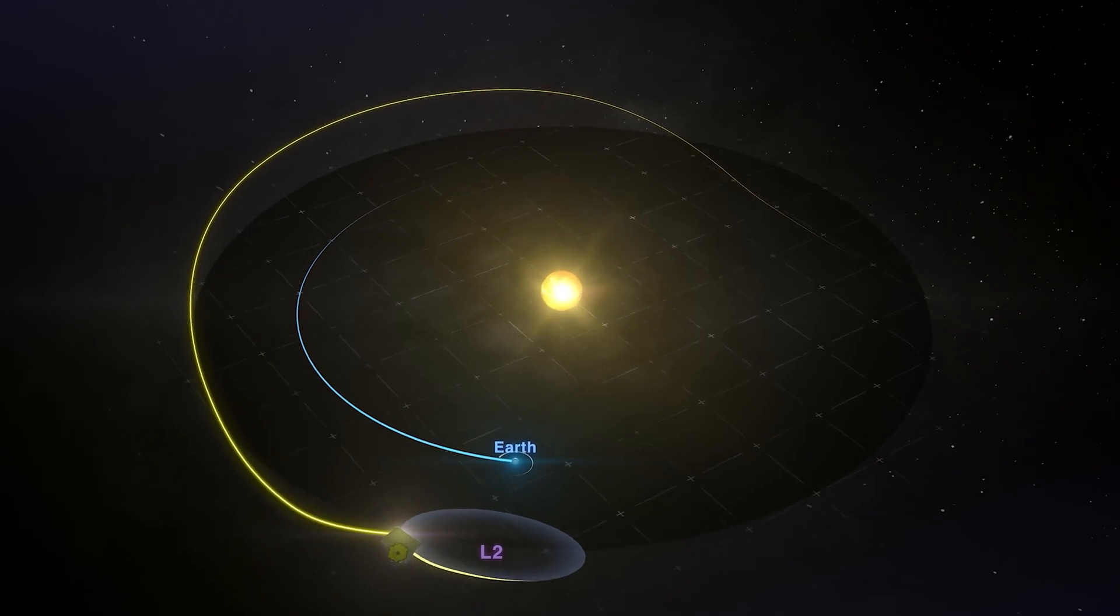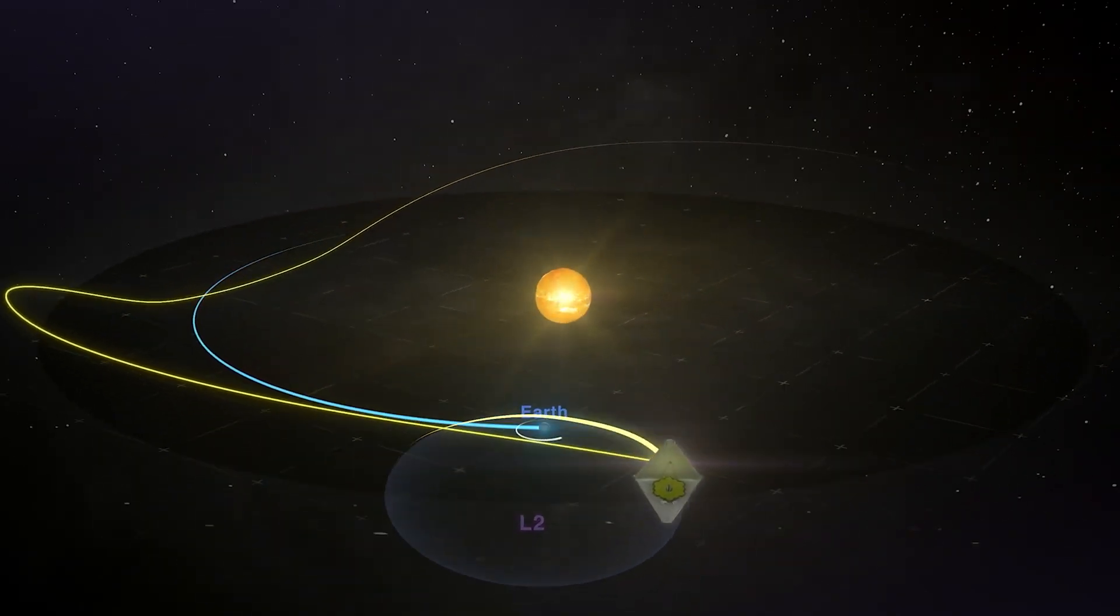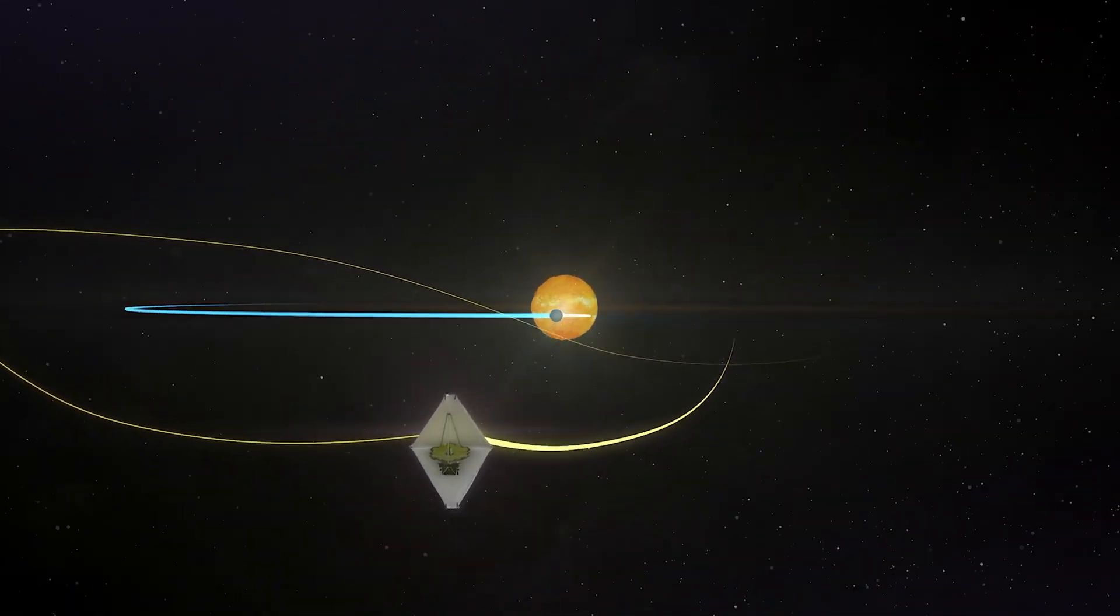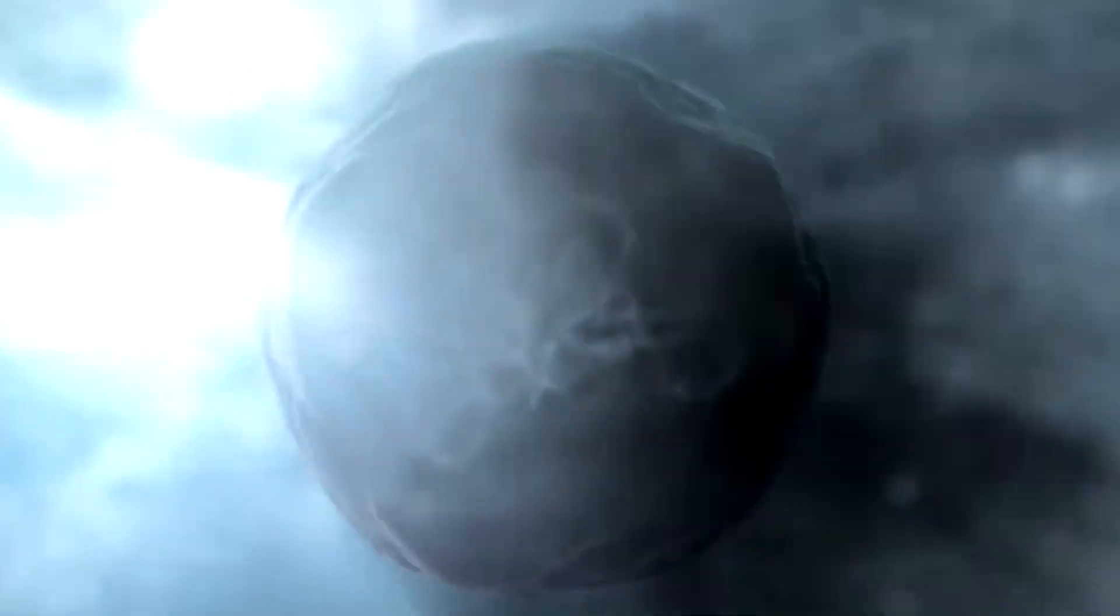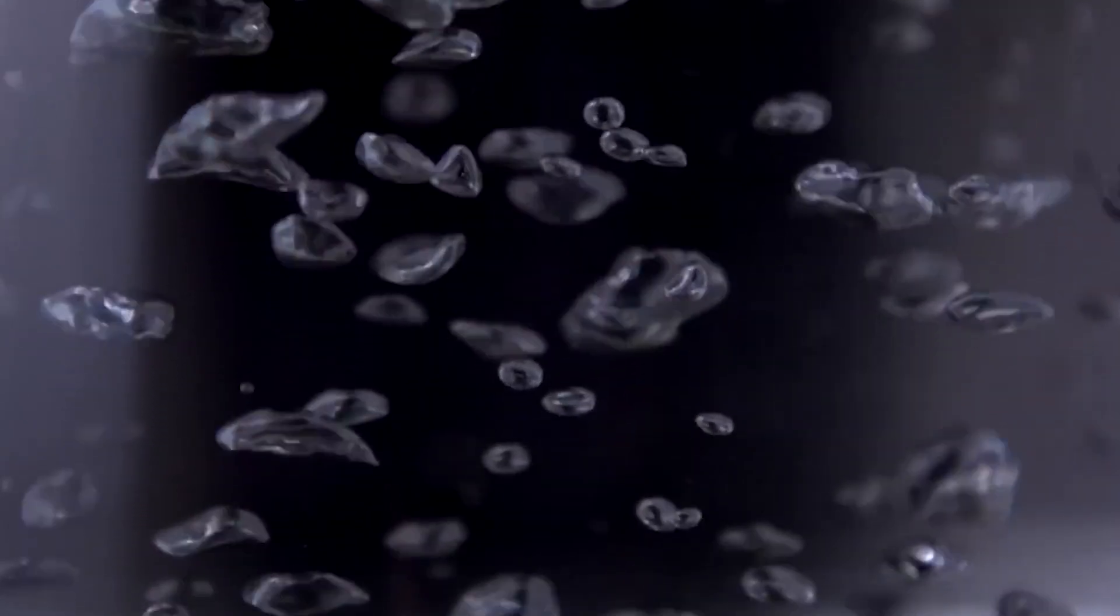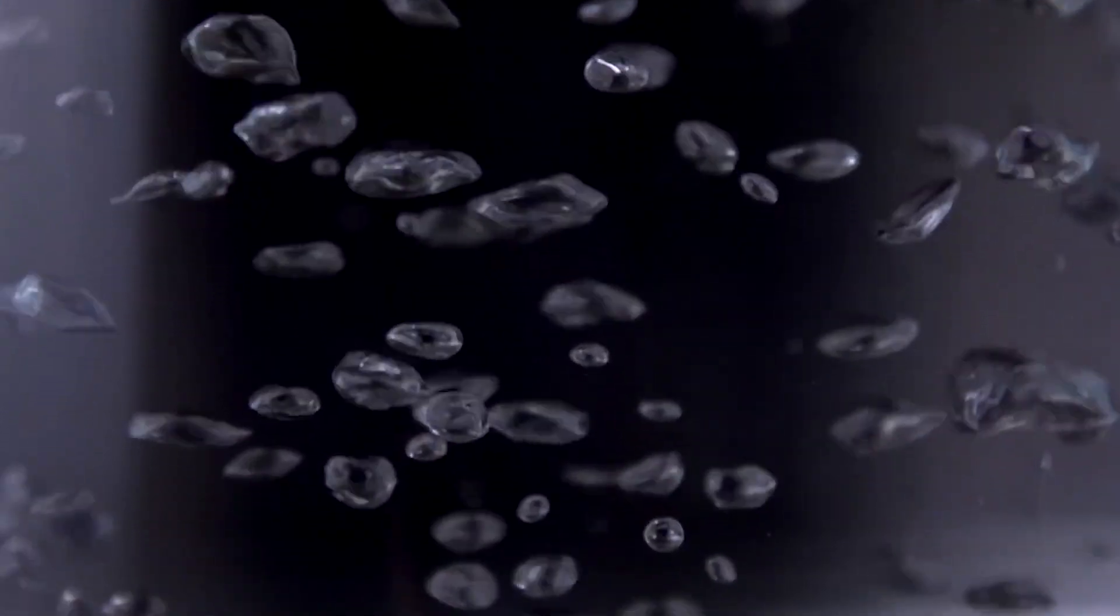The next step will be to assess the atmospheric chemistry on Proxima b to determine its potential to support life, focusing on the presence of gases such as oxygen, water vapor, and methane as key indicators of habitability.